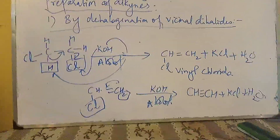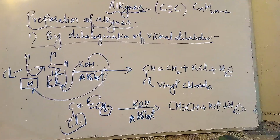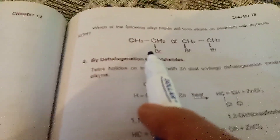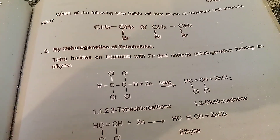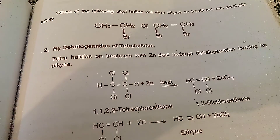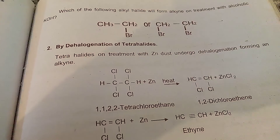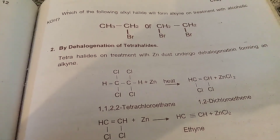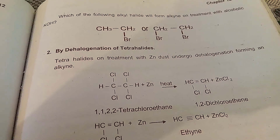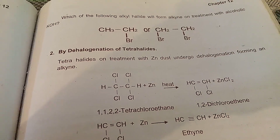If you are asked about dehydrohalogenation of vicinal dihalides, we will identify which alkyl halide to use. In your book there are two alkyl halides mentioned — one is bromoethene. If you have a vicinal dihalide and perform dehydrohalogenation, then you will produce an alkyne as the product.